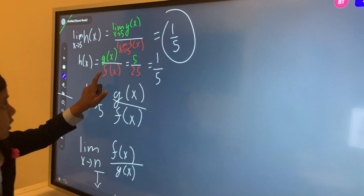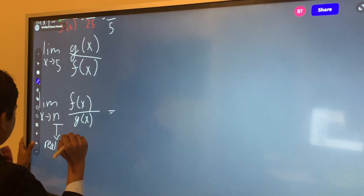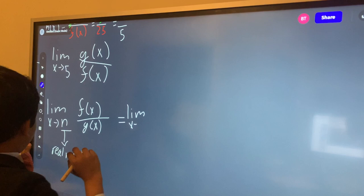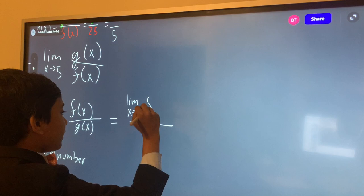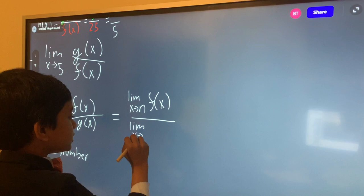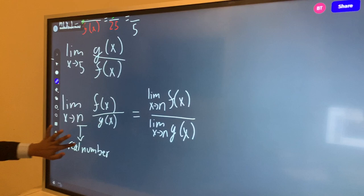We found that this must be actually equal to... This must be equal to the limit as x approaches n of f(x) over the limit as x approaches n of g(x). Alright, so this is our statement.